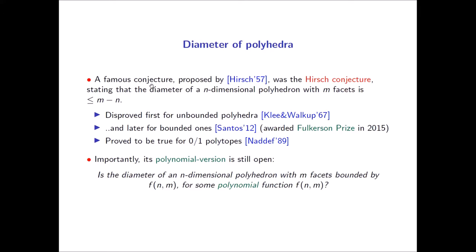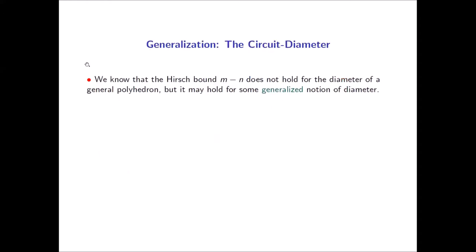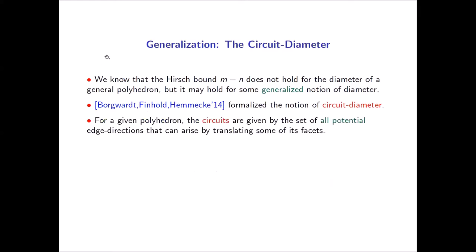Another question, in light of the Hirsch conjecture being false, is whether it holds for some generalized notion of diameter. In 2014, Borgwardt, Finhold, and Hemecki formalized the notion of the circuit diameter, where we expand the set of directions we're allowed to move in. At each step, we're allowed to move along so-called circuits of the polyhedron.